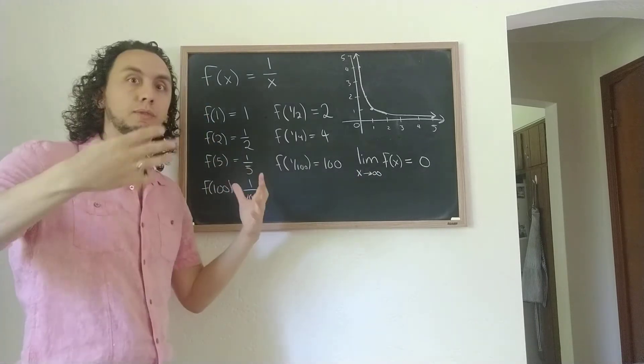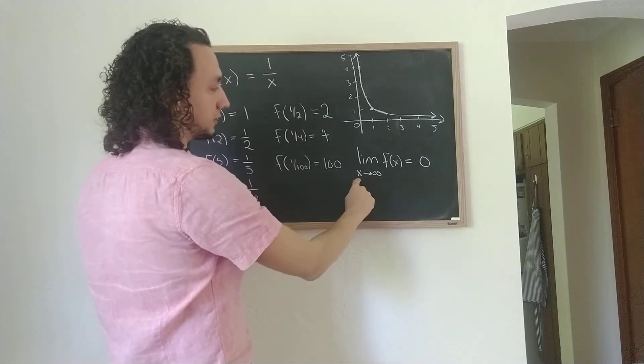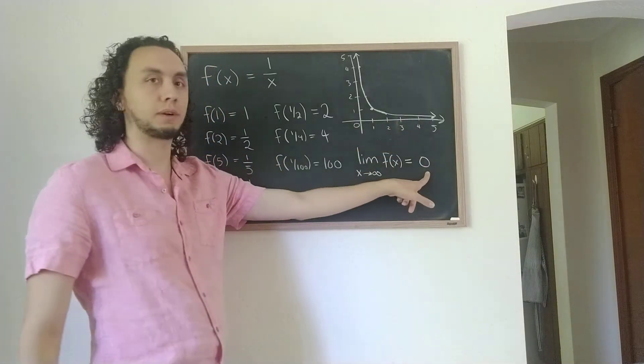Two, five, a hundred, a thousand, a million, a billion, whatever. So as x gets larger and larger, that's what this is saying, f of x gets closer and closer to 0.